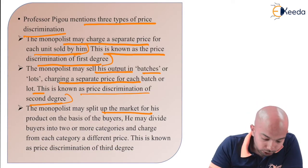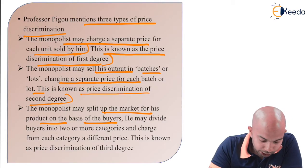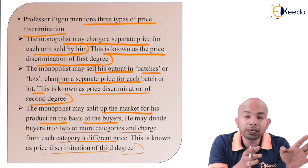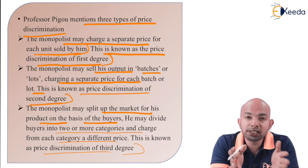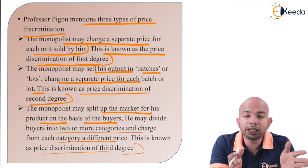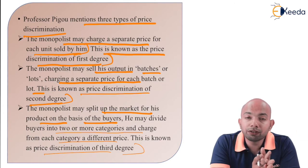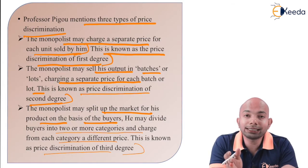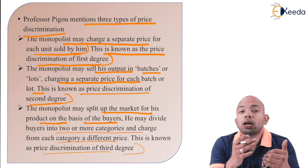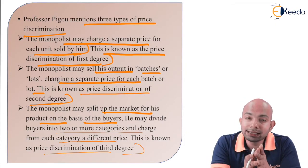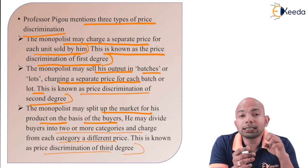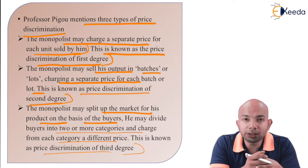The monopolist may split up the market for his product on the basis of buyers. He may divide buyers into two or more categories and charge each category a different price. This is known as price discrimination of the third degree. In third degree price discrimination, I segregate the market according to my needs. For instance, if I have a segment of ages 18 to 25 as one target and 26 to 30 as a different target, I would sell this product at a different price range for each target market, even though it is the same homogeneous product. That is price discrimination of the third degree.